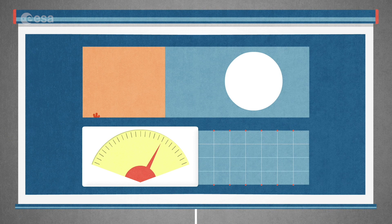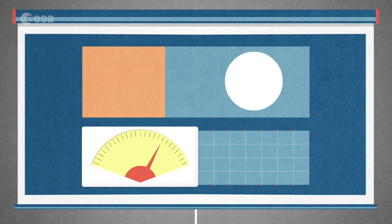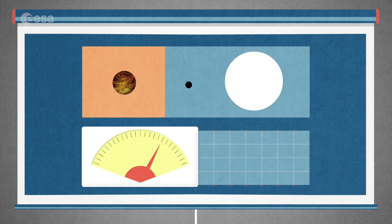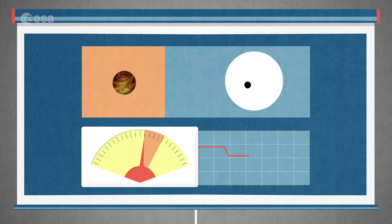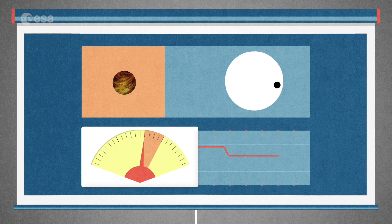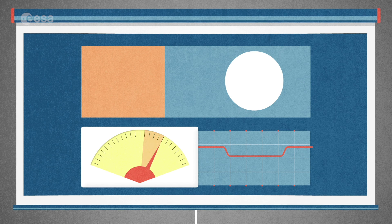To accurately measure the sizes of planets, CHEOPS will use a method called transit photometry. When a planet passes in front of its star, the so-called transit, it blocks a very small part of the stellar light. For a brief moment, that star gets dimmer.